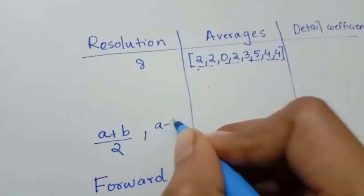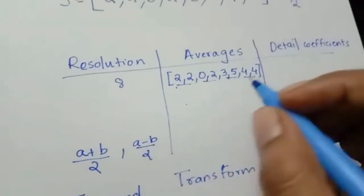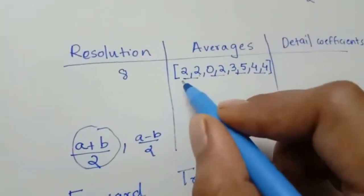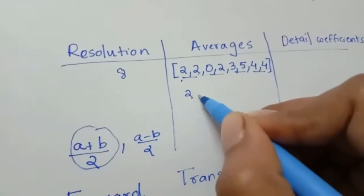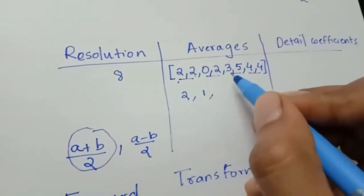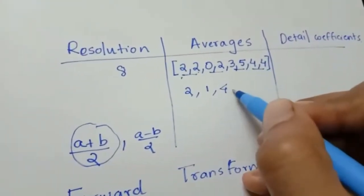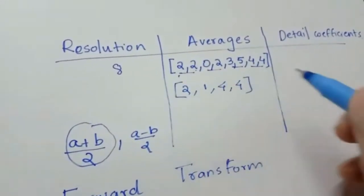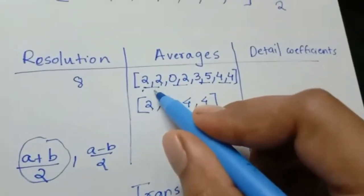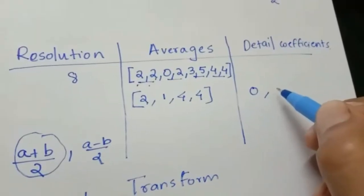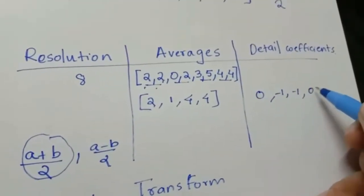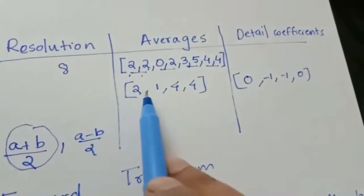Our first pair is 2 and 2, so (2 + 2) / 2 = 2. Next pair 0 and 2: (0 + 2) / 2 = 1. Next pair 3 and 5: (3 + 5) / 2 = 4. Next pair 4 and 4: (4 + 4) / 2 = 4. For detail coefficients: (2 - 2) / 2 = 0; (0 - 2) / 2 = -1; (3 - 5) / 2 = -1; and (4 - 4) / 2 = 0.